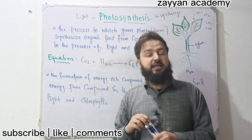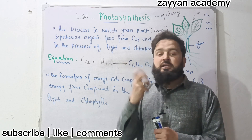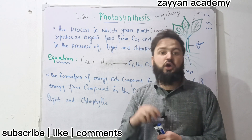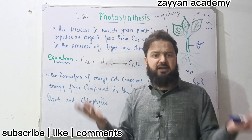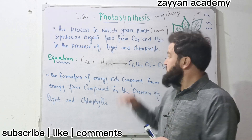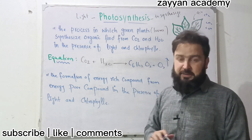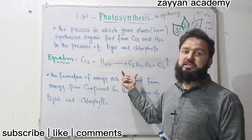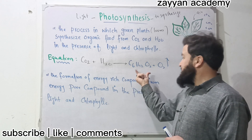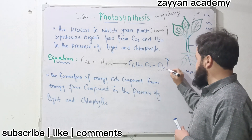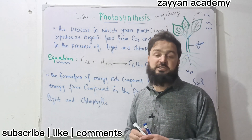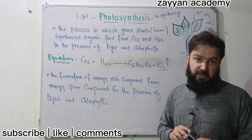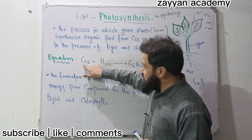The Green Pigment is Chlorophyll. The Green Pigment absorbs Visible Light. The Visible Light means Sunlight. So it requires the presence of light. The results of photosynthesis include oxygen. The oxygen is a byproduct that can be used by animals. CO2 is an example of a reactant.